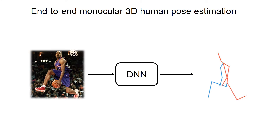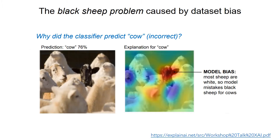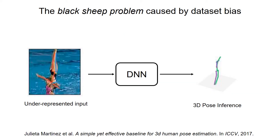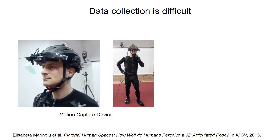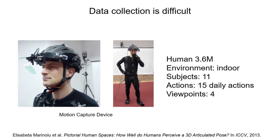End-to-end deep learning has been widely adopted for monocular 3D human pose estimation. However, deep models are vulnerable to dataset bias. Inputs that are underrepresented in the training data, like the black sheep in this picture, can cause large generalization error. This problem also exists and is even more severe for 3D human pose estimation. Collecting accurate 3D labels is time-consuming and requires expensive motion capture devices, and collected datasets can be biased towards constrained indoor appearance and selective daily actions.